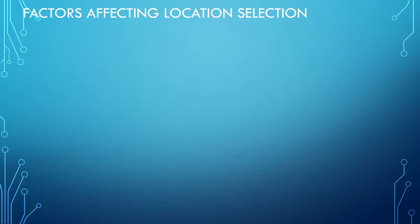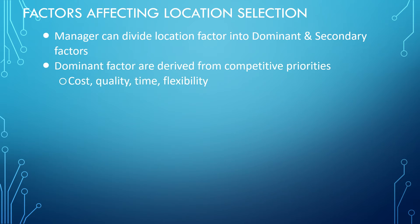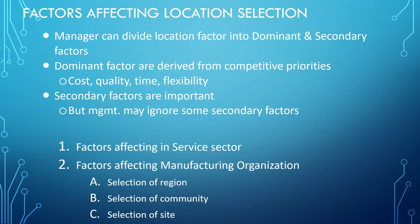Managers can divide location factors into dominant and secondary factors. Dominant factors are derived from competitive priorities such as cost, quality, time, and flexibility. Secondary factors are important but management may choose to overlook some of them, such as factors affecting the service sector, factors affecting the manufacturing organization, and selection of region, community, and site.